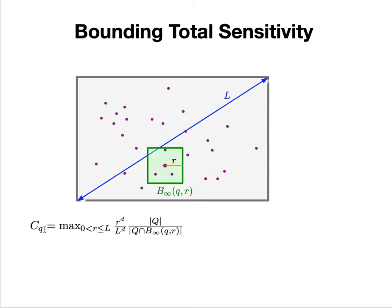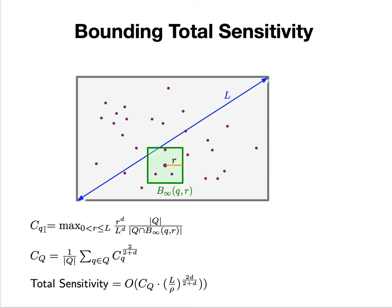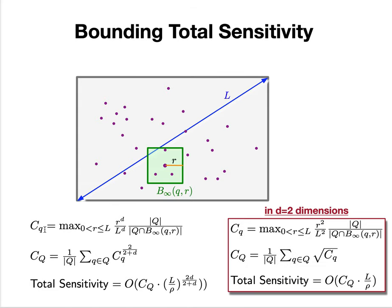To understand the sensitivity, we created the C_q term, which is tied to the sensitivity of an individual point. This is defined by taking a point q and drawing an L∞ ball around it of radius r.